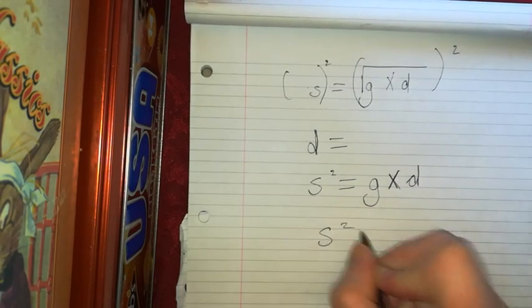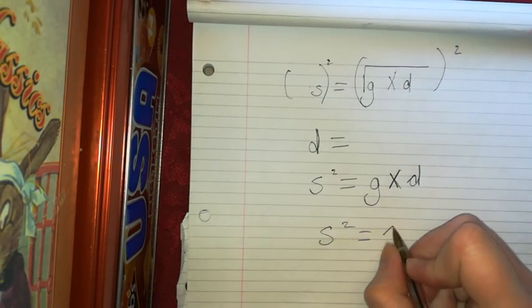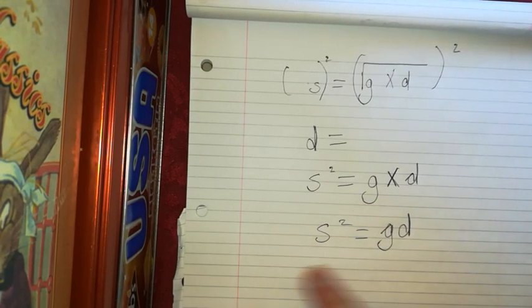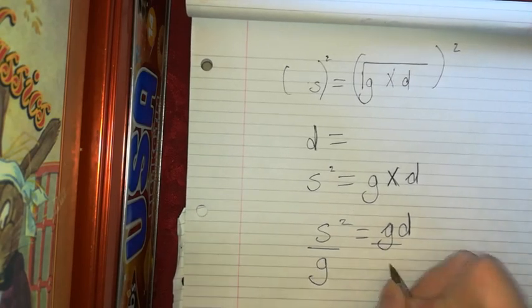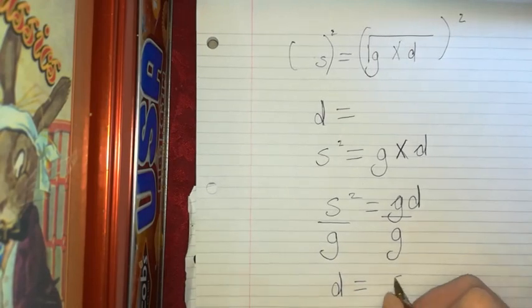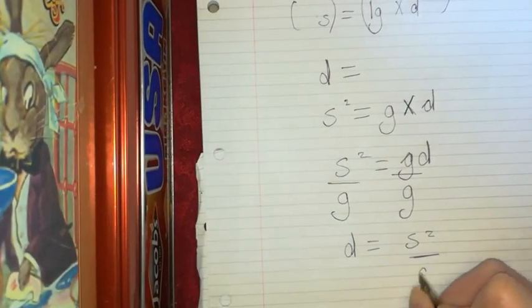So s squared equals g over d. So I want to get d by itself. So I'm going to have to divide both sides by g. So then d equals s squared over g. So that's rearranging it.